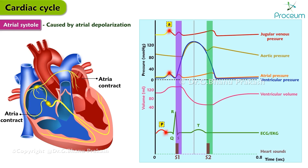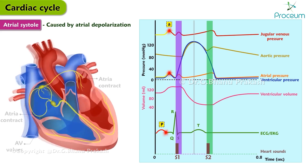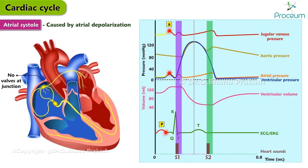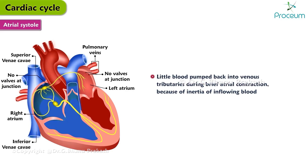The atria exert pressure on the blood within, which forces blood through the open atrioventricular valves into the ventricles. Because there are no valves at the junction of the vena cava and right atrium, or at the junction of the pulmonary veins and left atrium, atrial contraction may force blood in both directions. However, little blood is actually pumped back into the venous tributaries during the brief atrial contraction, mainly because of the inertia of the incoming blood.